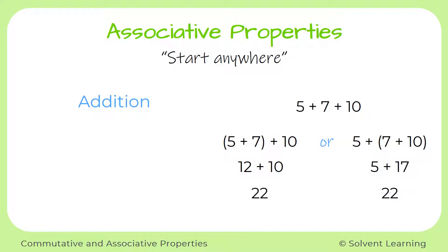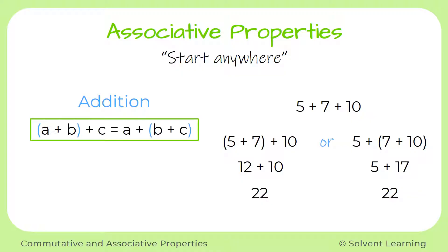So when we're adding a bunch of numbers together, it doesn't matter which numbers you start with. As long as at the end you end up adding everything together, you will get the same answer. And we can represent this rule using the variables A, B, and C — just like what we did with the numbers 5, 7, and 10 — showing that we can start with the first two numbers or the last two numbers and we'll still get the same total.